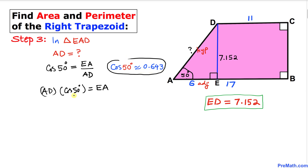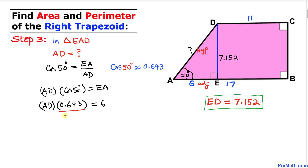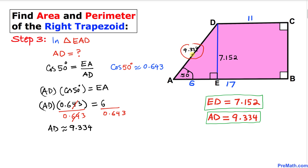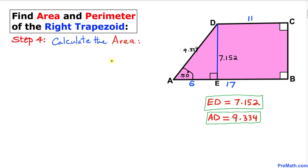Cosine of 50 degrees is approximately 0.643. So AD times 0.643 equals AE, which is 6. Dividing both sides by 0.643 to isolate AD, we get AD approximately equal to 9.334 units.